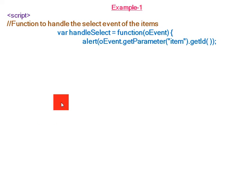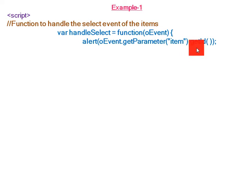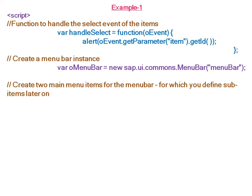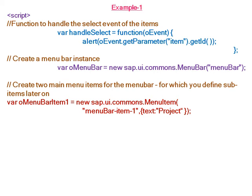This means if the user clicks on the menu item, then he gets an alert. The alert shows the item id. Now we create a menu bar using the constructor for creating a new menu bar. The first menu bar item has the text 'Project', and this project menu bar item is added to the menu bar.